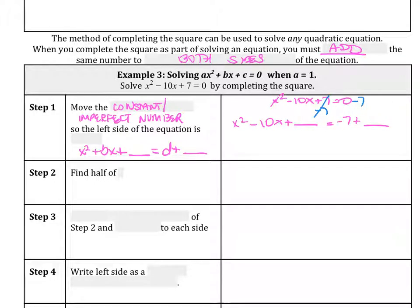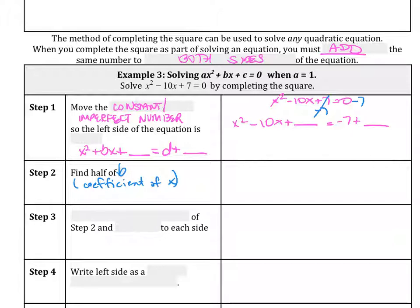That setup reminds us that we have to add to both sides of the equation — something some students forget, causing the solution to not come out correctly. After setting it up, we find half of b. b is the coefficient of x, which is negative 10. Negative 10 divided by 2 gives us negative 5, and I'm going to circle that number because it's important.